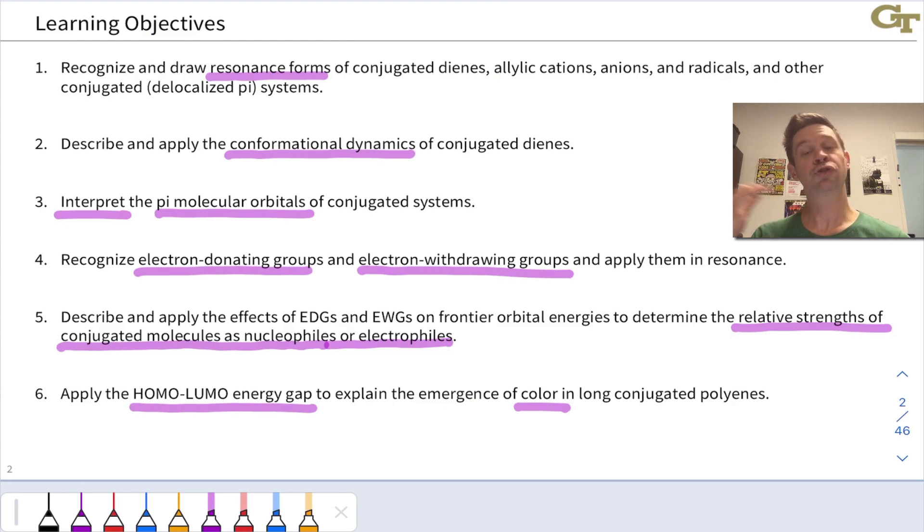We're going to learn to interpret the pi molecular orbitals of conjugated systems, so we're not going to draw these from scratch, generally. I'll give you a couple of tips for the HOMO and LUMO of conjugated dienes, but generally we're going to use a computer to calculate them and interpret their energies and shapes to make inferences about reactivity and structure.